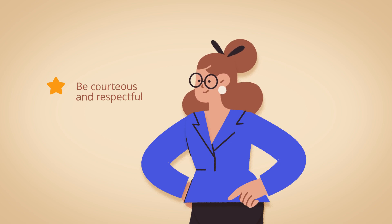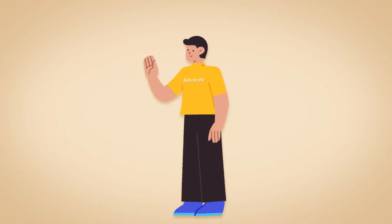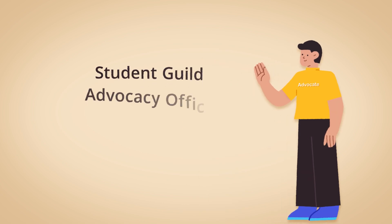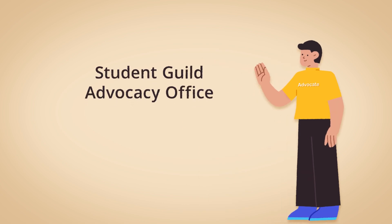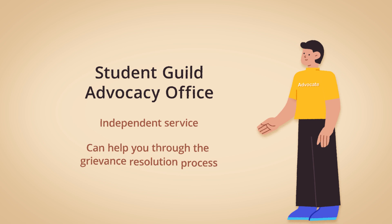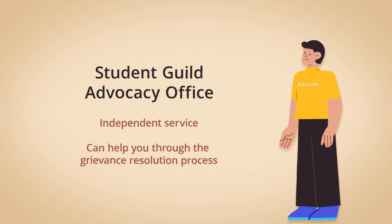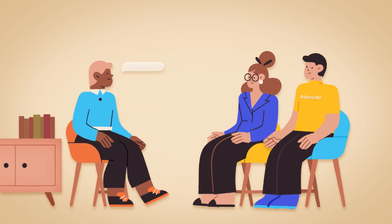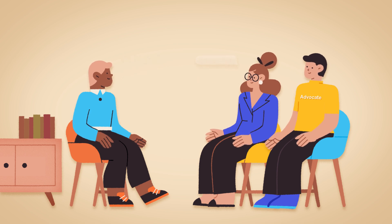If you need advice at any time, or you just don't know where to start, you can contact the Student Guild Advocacy Office. They are an independent service and can help you through the grievance resolution process. They can even organise for a support person to accompany you to informal resolution meetings.